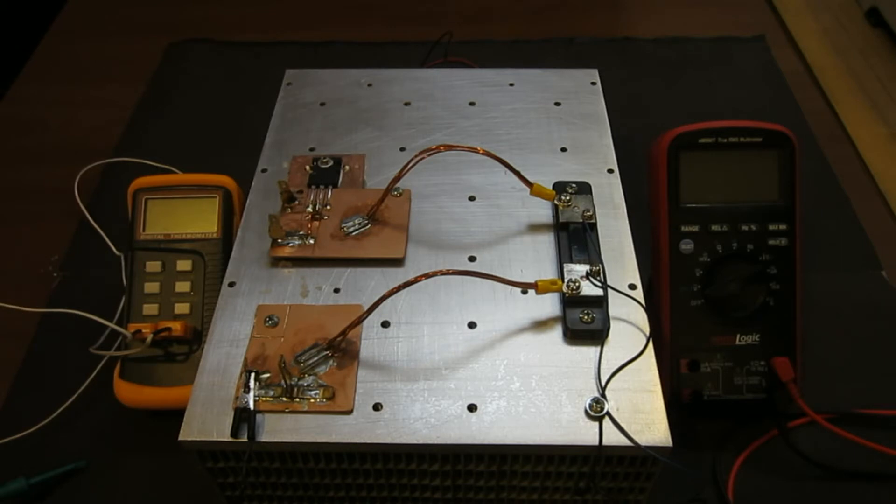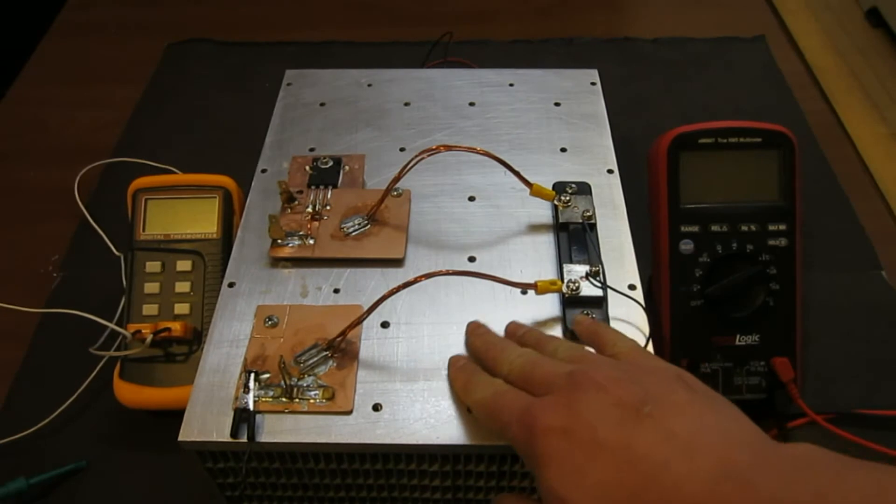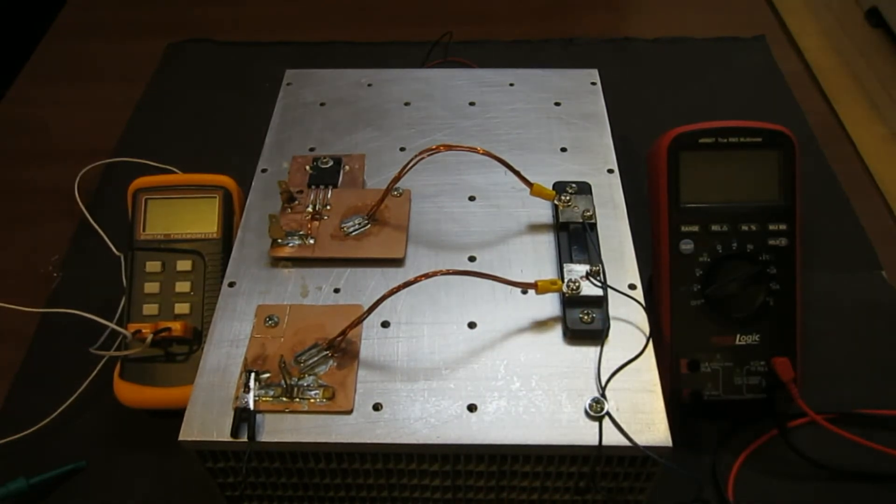Secondly, I also sanded down the top of the aluminum sink with 2000 grit sandpaper using a surface sander. And it is rather smooth now, so I think this would help the thermal performance this time. And lastly, I put a copper block between the MOSFET and the heatsink with thermal compound applied between.